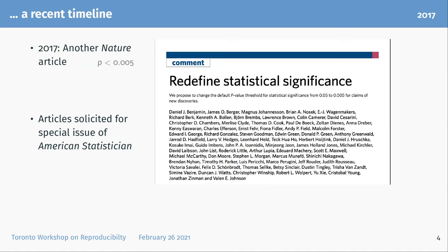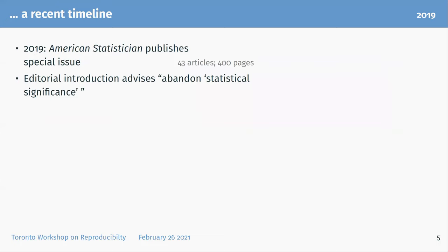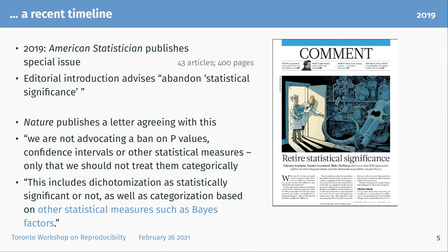At the same time, articles were solicited for a special issue of the American Statistician — really an expansion on the 2016 discussion, since there were so many different opinions in the group that created the public statement. That special issue was published in 2019: 43 articles and 400 pages, along with an editorial introduction advising abandoning the words 'statistical significance.' Nature published a letter agreeing — 'retire statistical significance.' It's worth noting this was not quite like the psychology journal ban; we're not advocating a ban on p-values or confidence intervals, only that we should not treat them categorically or dichotomize results as significant or not.